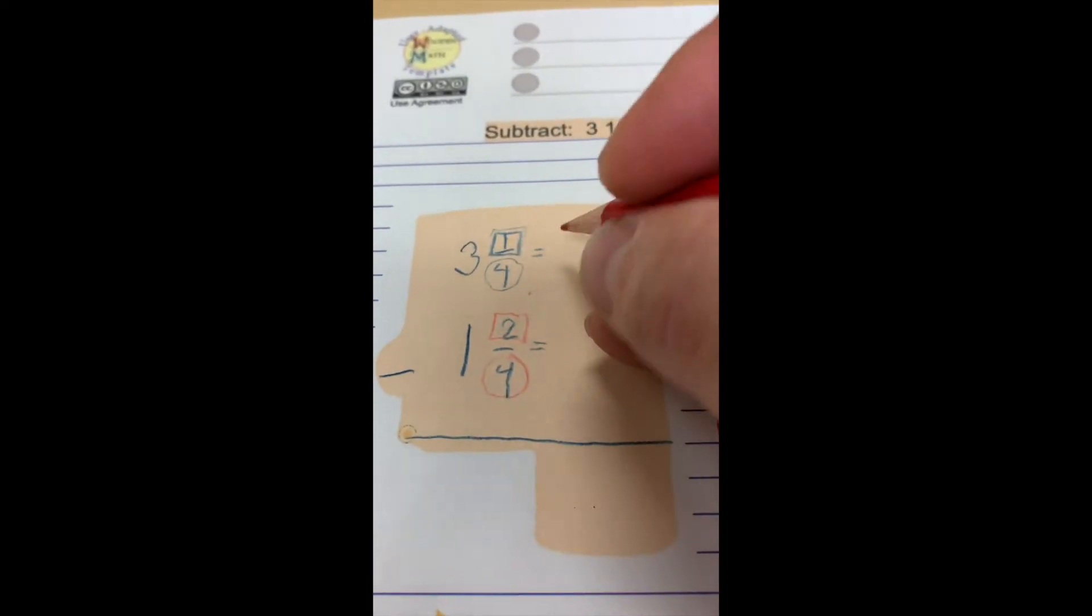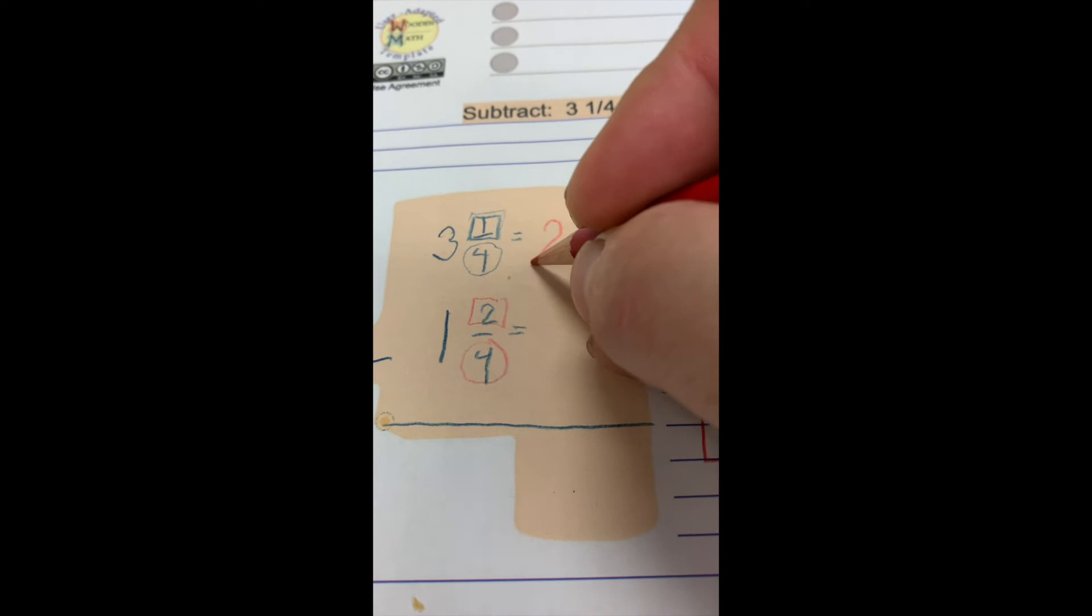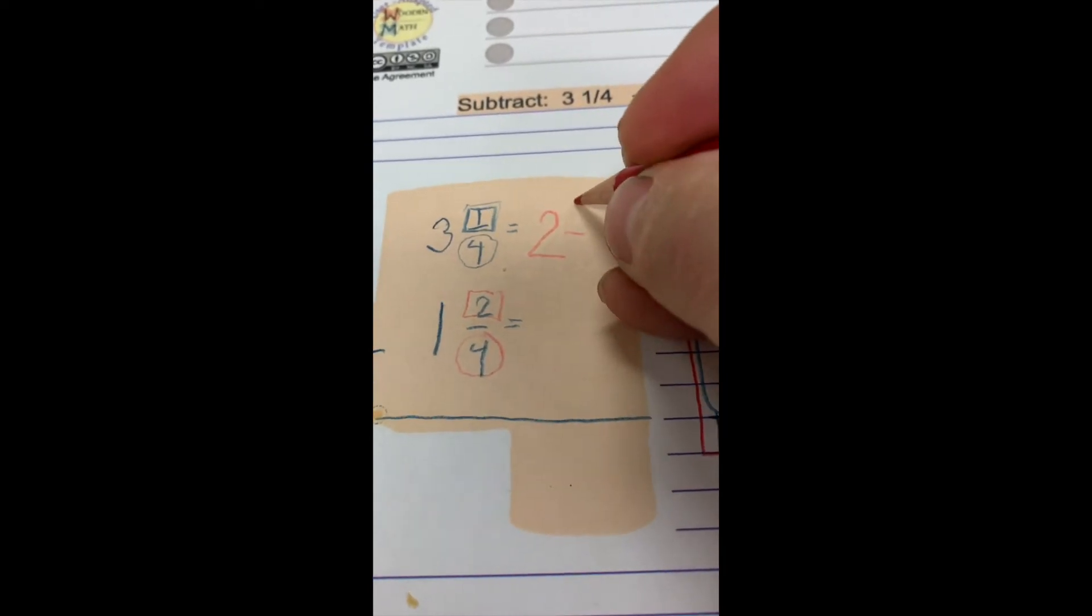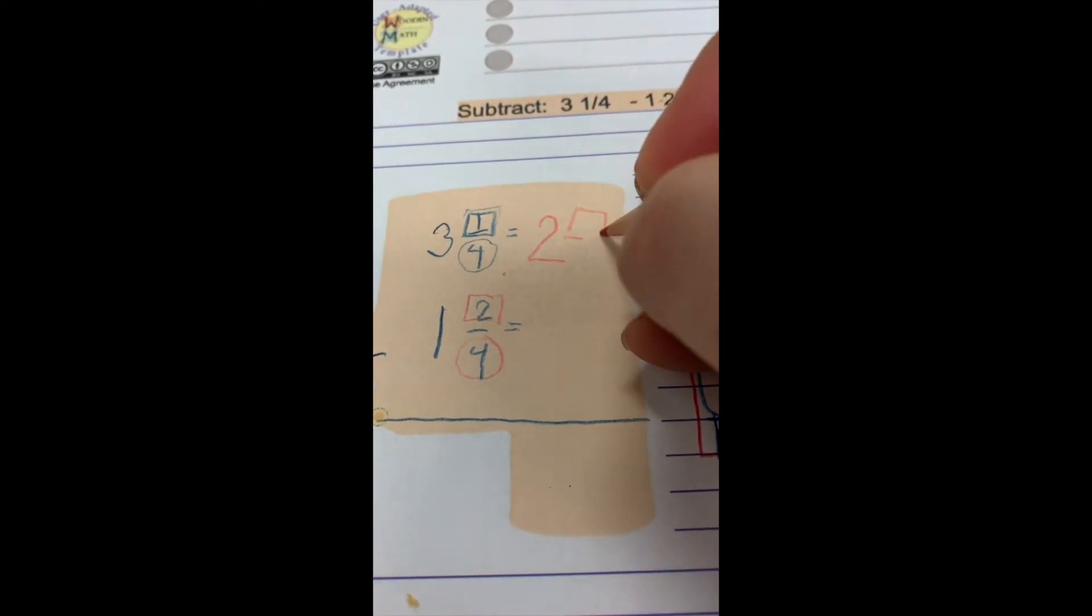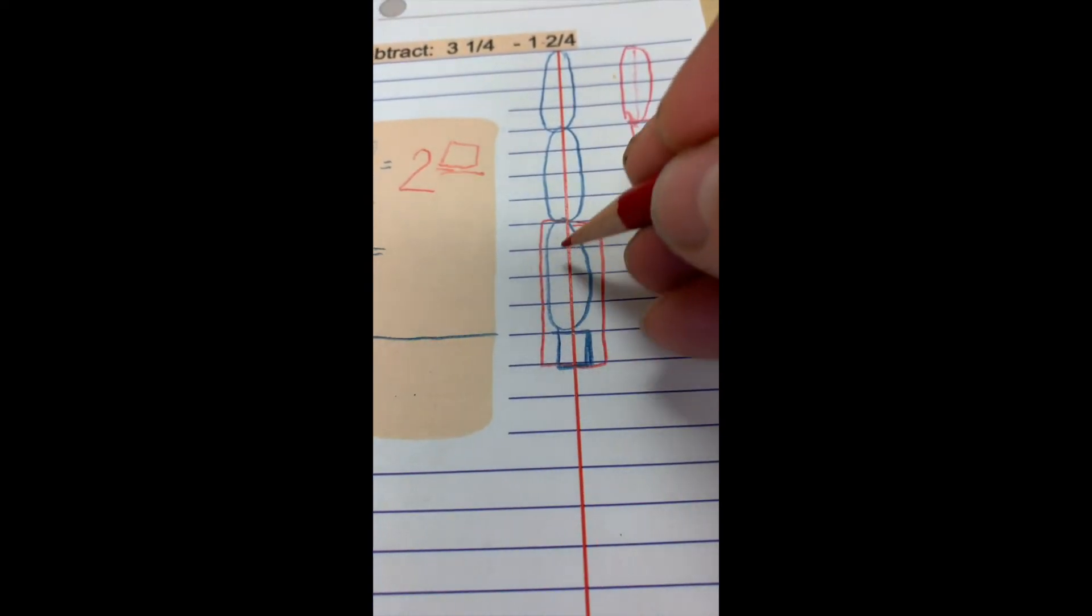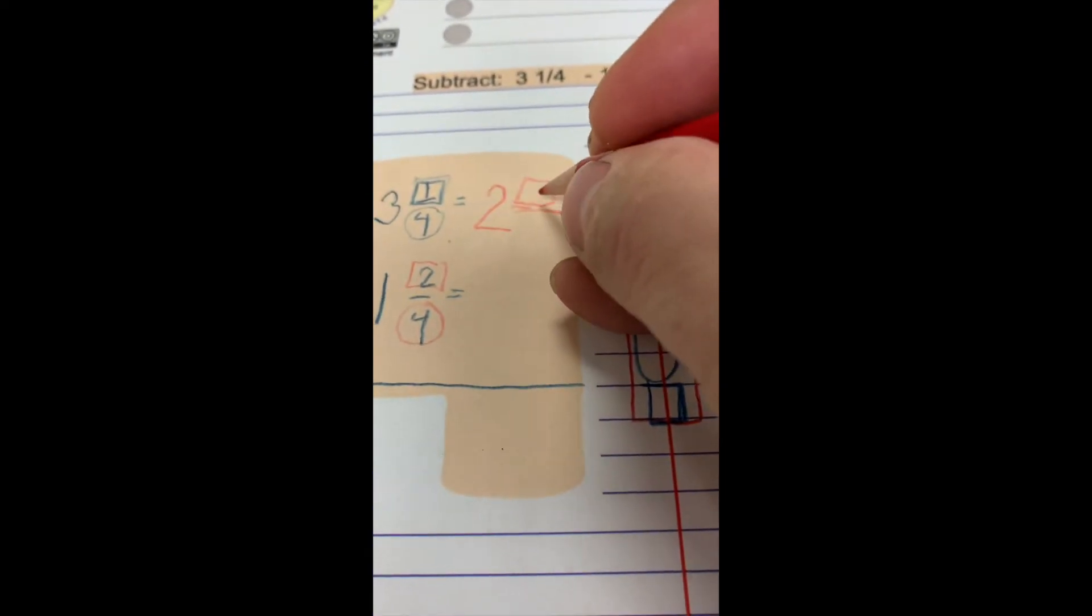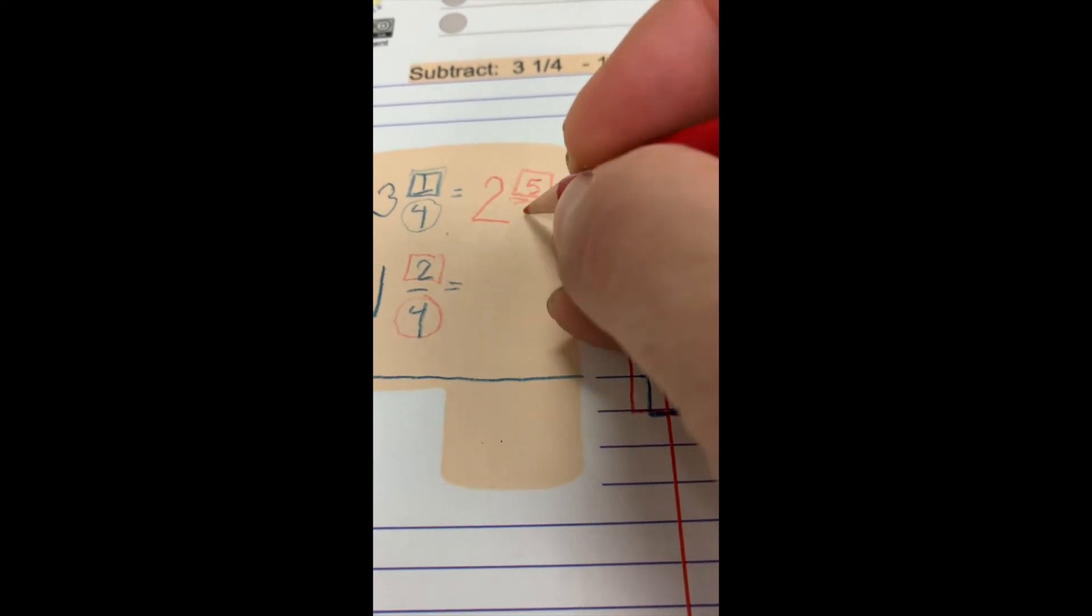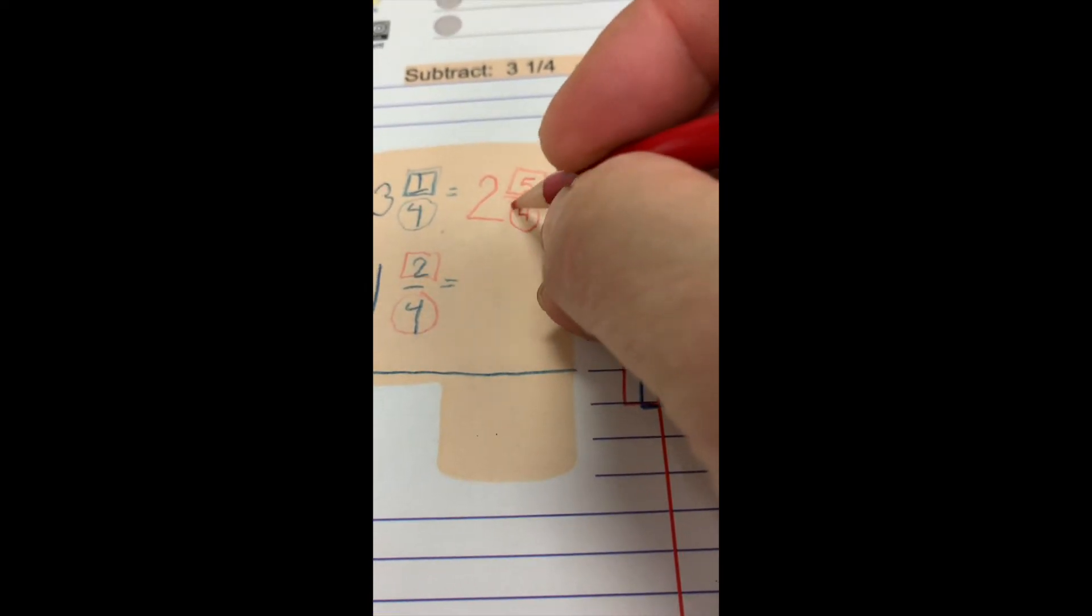So I have 2 whole inches. I don't have 3 anymore. And I just gained a bunch of parts. I now have 5. It still takes 4 to make a whole inch.